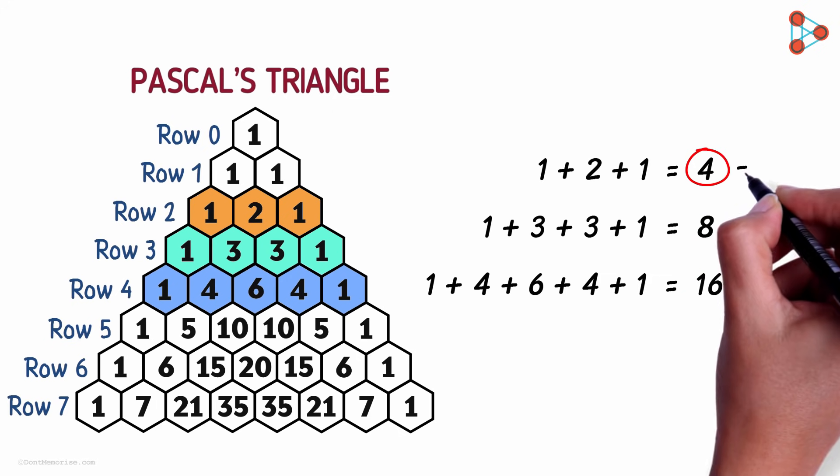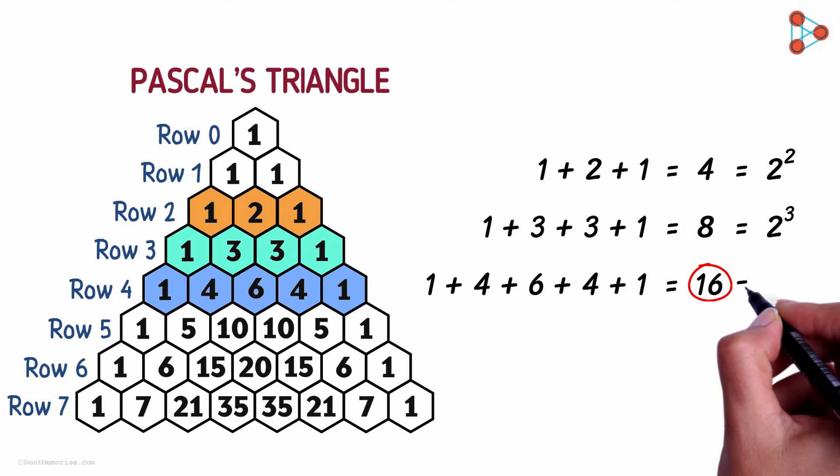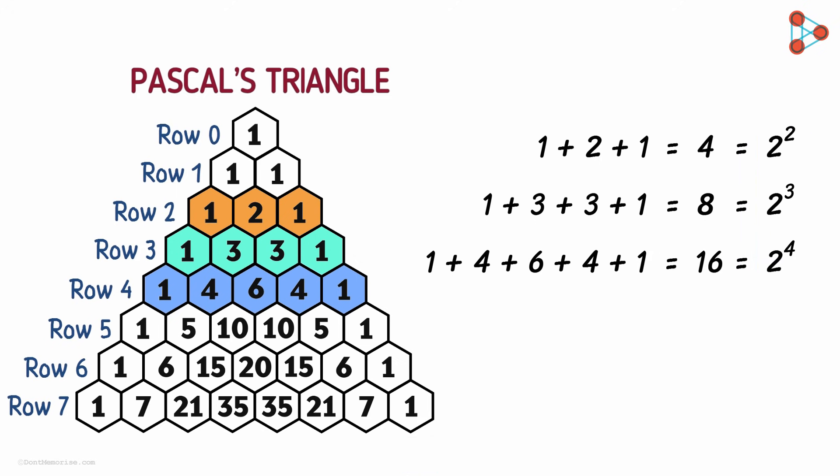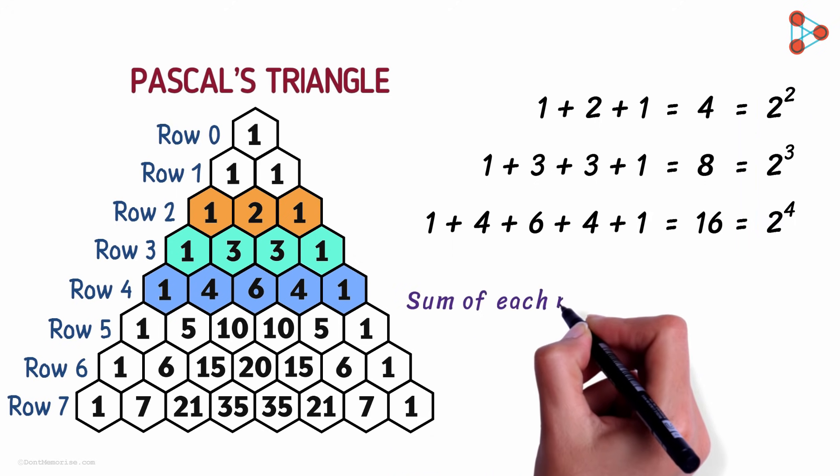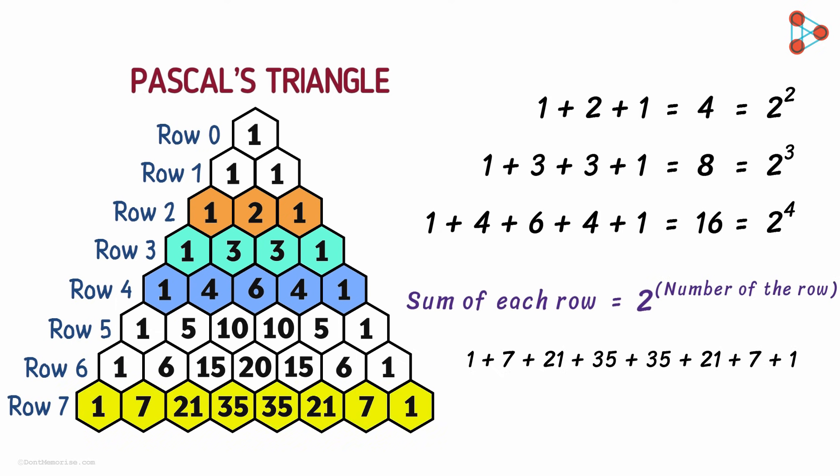4 can be written as 2 squared. 8 is 2 cubed. 16 is 2 raised to 4 and so on. How can we generalize this pattern? Yes, the sum of each row can be represented as a 2 raised to the number of the row. You can check it out for any row. Take the 7th row for instance. We will get the sum as 128 which is nothing but 2 raised to 7.